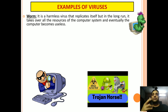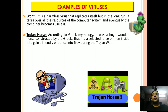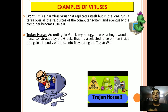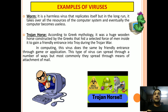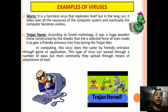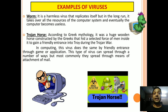The next one is Trojan Horse. According to Greek mythology, it was a huge wooden horse constructed by the Greeks that hid a selected force of men inside it to gain a friendly entrance into Troy, a city, during the Trojan War. This will be much better explained if you have seen the Hollywood movie Troy. Similarly, in computing, this virus does the same thing by gaining friendly entrance through a game or application. This type of virus can spread through a number of ways, but most commonly they spread through email attachments. If you open an unknown email with an attachment which you are not certain about, this virus can enter your computer.